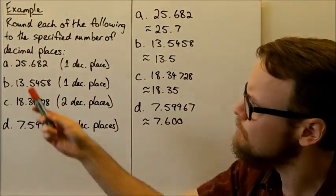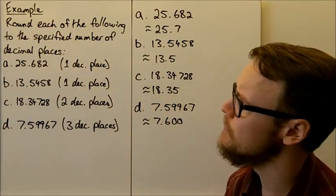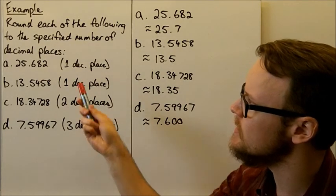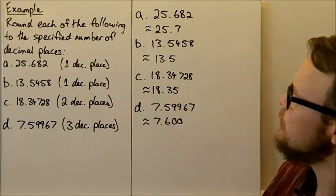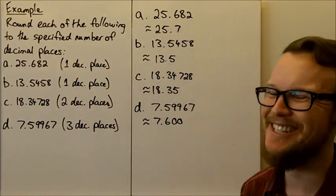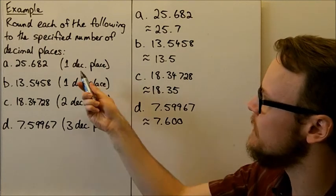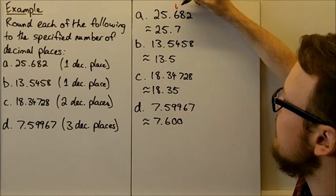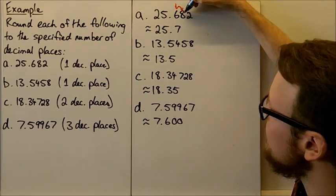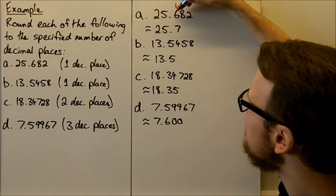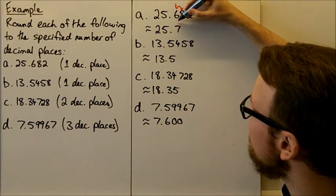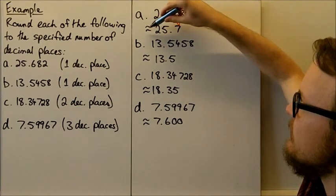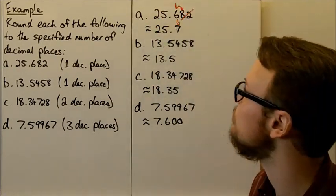Looking at some examples, we're asked to round each of the following numbers to the specified decimal places. For our first one, 25.682 rounded to one decimal place: we look at the first decimal place and the number next to it. The number next to it is bigger than 5 — it's 8 — so we need to round up from 6 to 7. So it's approximately equal to 25.7.